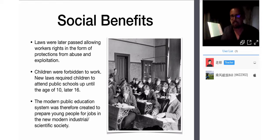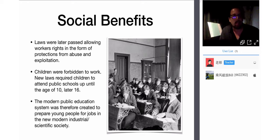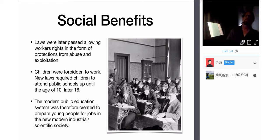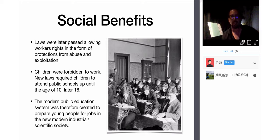Slavery was very prevalent during the 16th to the end of the 19th century. Laws were later passed giving workers protections from abuse and exploitation — the 40-hour work week, for example. We celebrate Workers' Day in May. These rights of workers were won through protest, struggle, and union labor organizing. Children were forbidden to work. New laws required children to attend public schools up until the age of 10, and later 16.